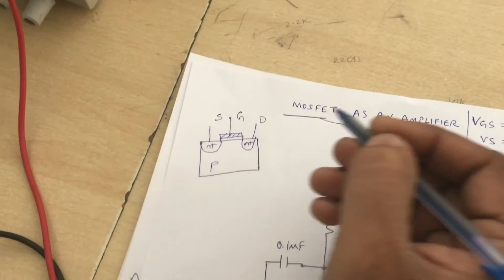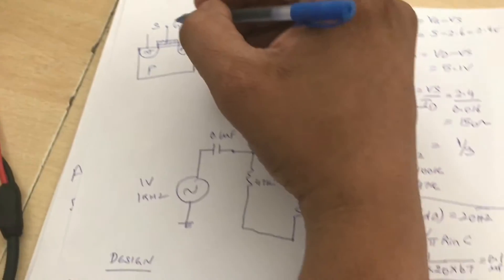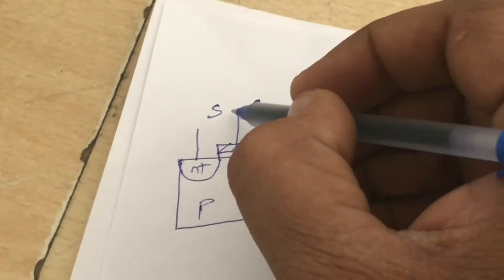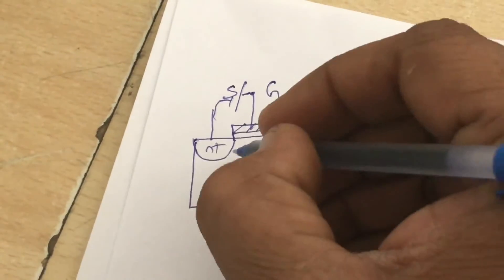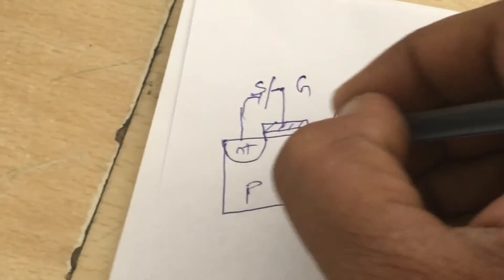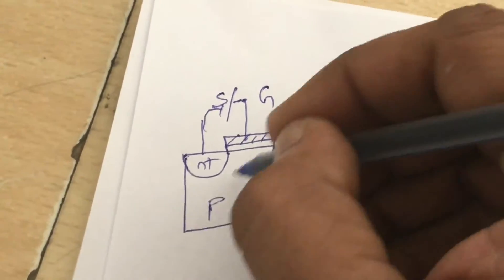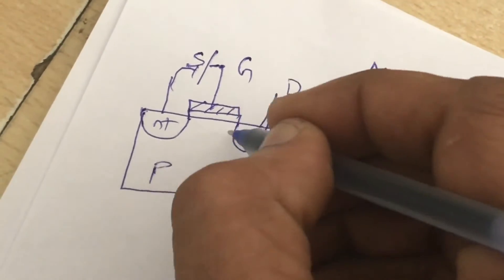If you see the working, basically you need to apply a positive gate voltage with respect to source in order to create a channel between source and drain. The minority charge carriers will be attracted towards the surface and there will be a channel created between source and drain.